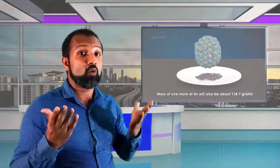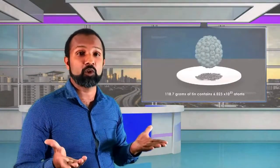Similarly, one mole of tin (stannous) contains 118.7 grams. In other words, 118 grams of tin contains one mole, which means there are 6.022 × 10²³ atoms.